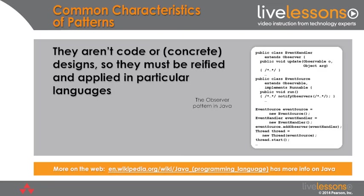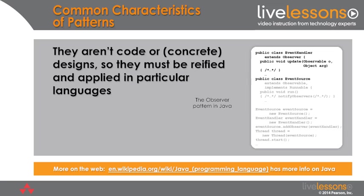Because patterns aren't code or even necessarily concrete designs, they have to be reified and applied in particular programming languages or particular contexts. For example, here's an application of the observer pattern written in Java using some of the key parts of the Java JDK libraries. We have something called an event handler that inherits from observer, which is part of the JDK. We then have something called event source, which inherits from observable and implements the runnable interface so it can be spawned and run in a separate thread of control. In the implementation, we create an event source object, create an event handler, add the event handler to the event source — which is the subject — then create a new thread and start it, and events will be disseminated appropriately to the observers as various conditions change.